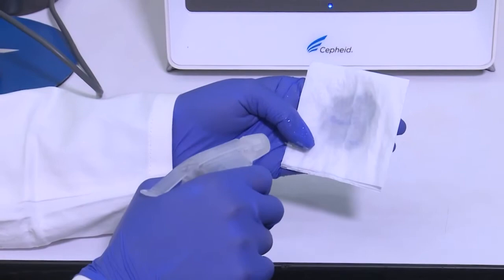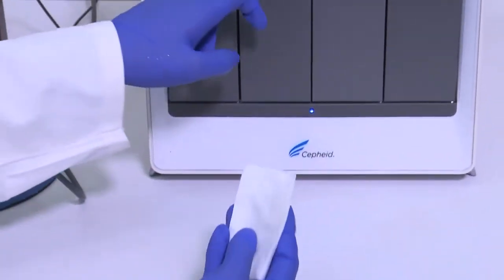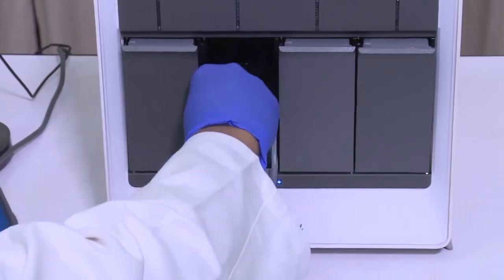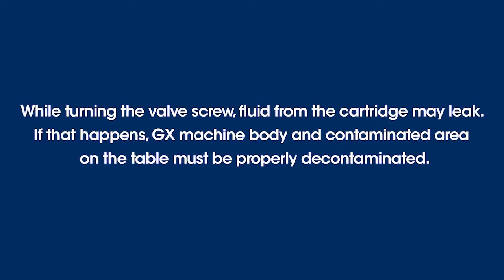Decontaminate the module. While turning the valve screw, fluid from the cartridge may leak, and if this happens, the GX machine body and the contaminated area on the table must be properly decontaminated.